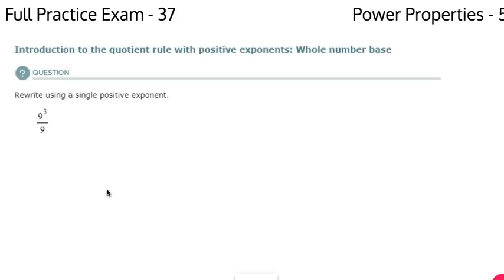Power properties number five, full practice exam 37. Rewrite using a single positive exponent. If I look at this, I have nine to the third power over nine, that's really nine to the first power. So if we have the same base, we subtract our exponents, which gives me nine to the second power.